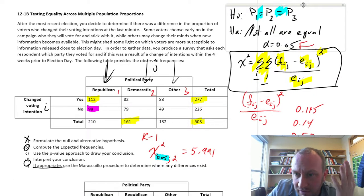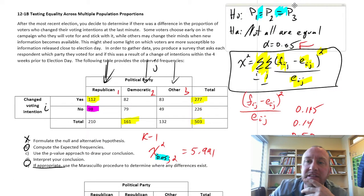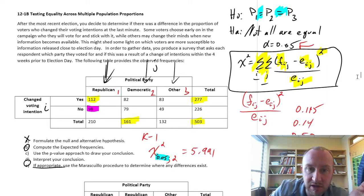Our evidence supports the null hypothesis, so we are unable to show that there is a difference in the proportion of voters who changed their voting intention within four weeks of the election. Okay, so that's it for this exercise.